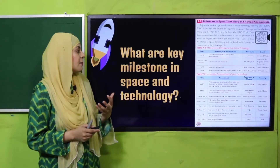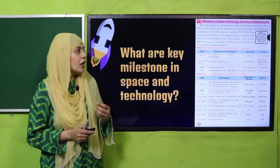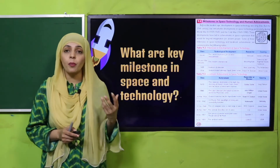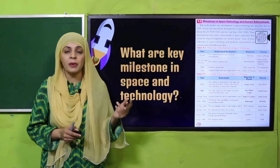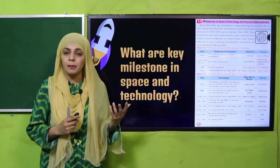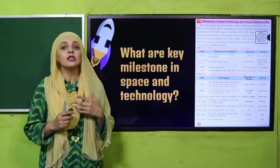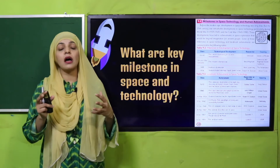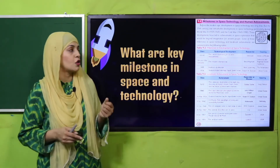What are the key milestones in space and technology? Observatories were built, telescopes were invented, spacecrafts were made, people went into space, spacewalks were conducted, the moon was landed on, and Mars was also landed on. These are the different milestones of space technology.